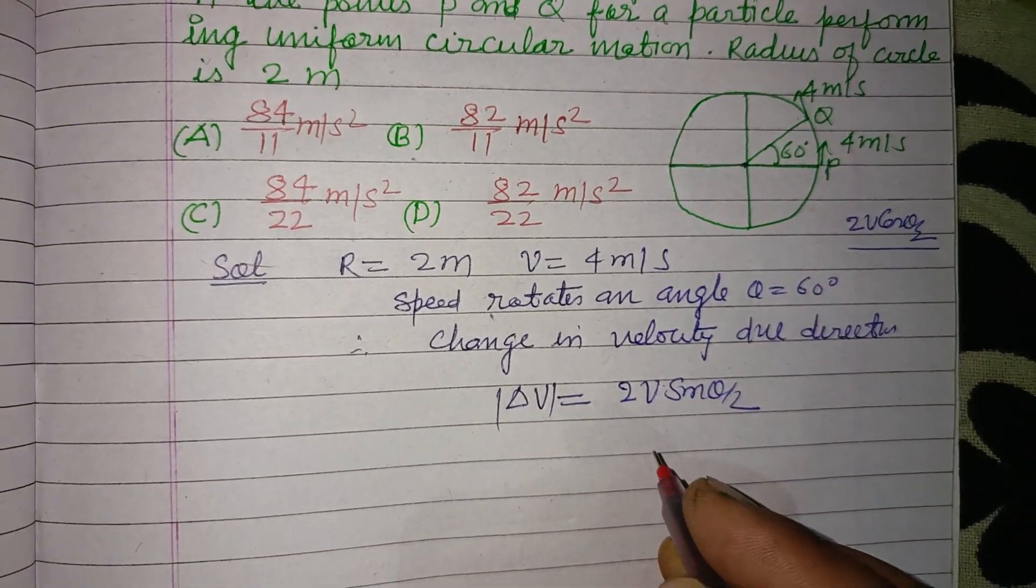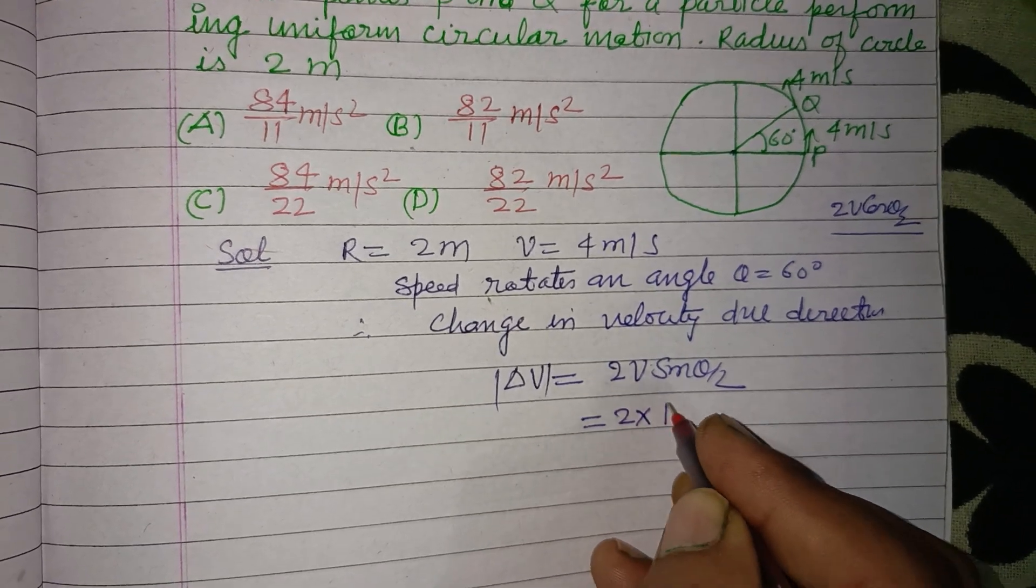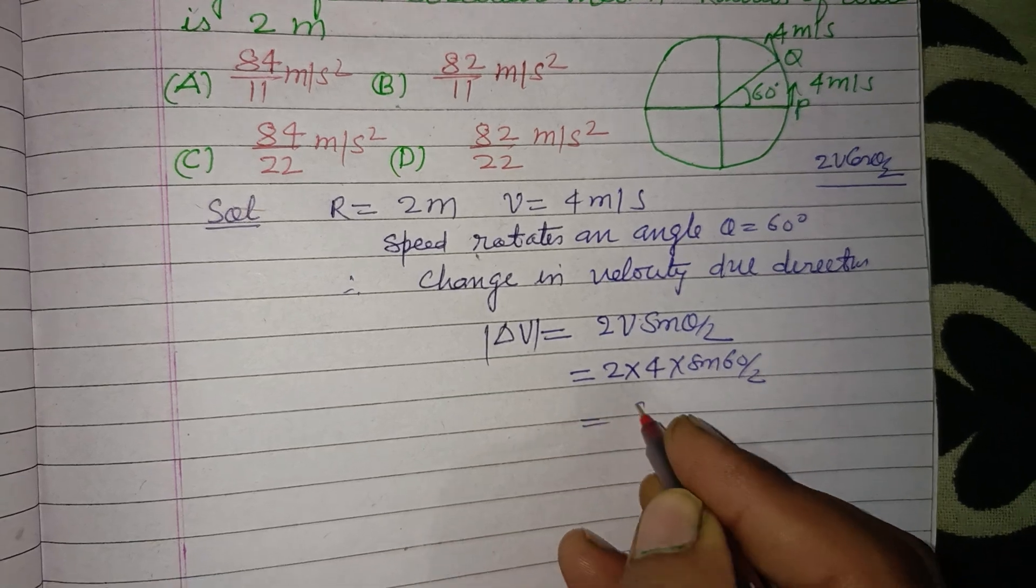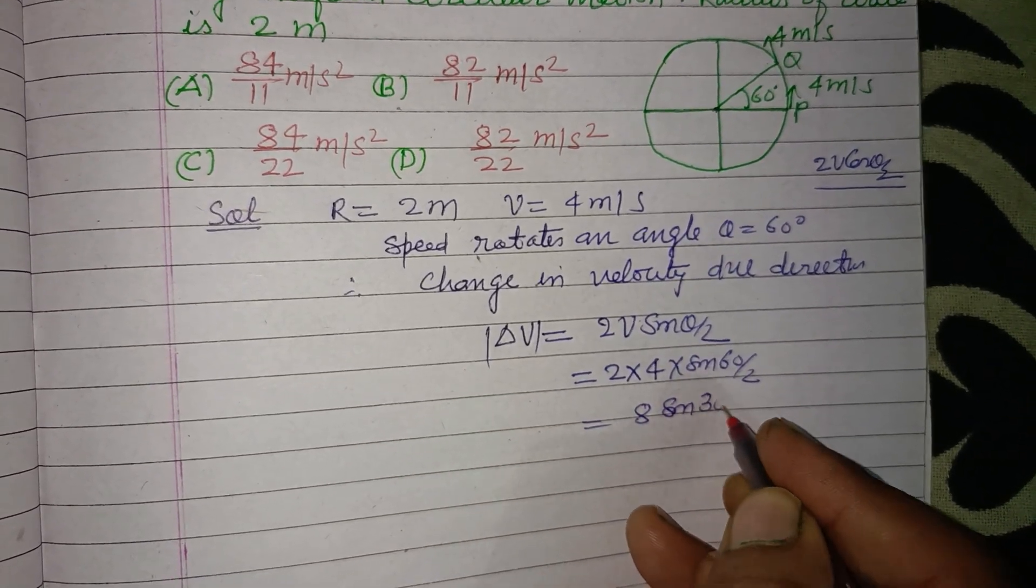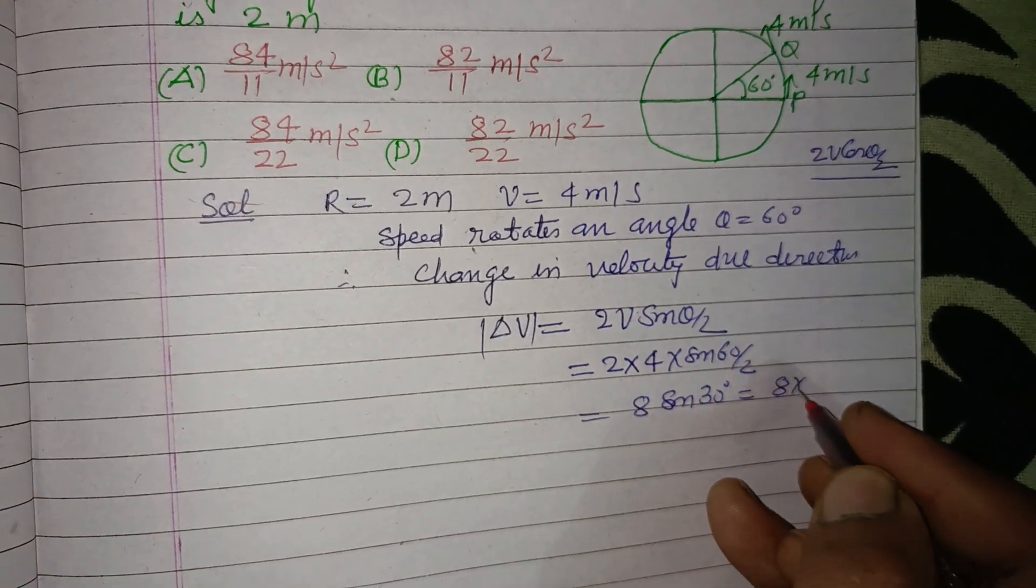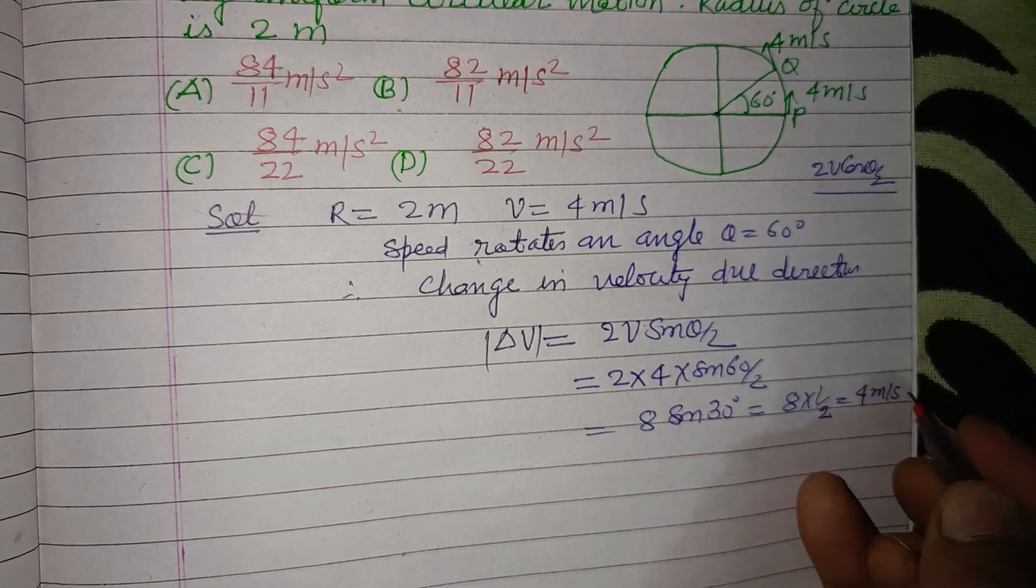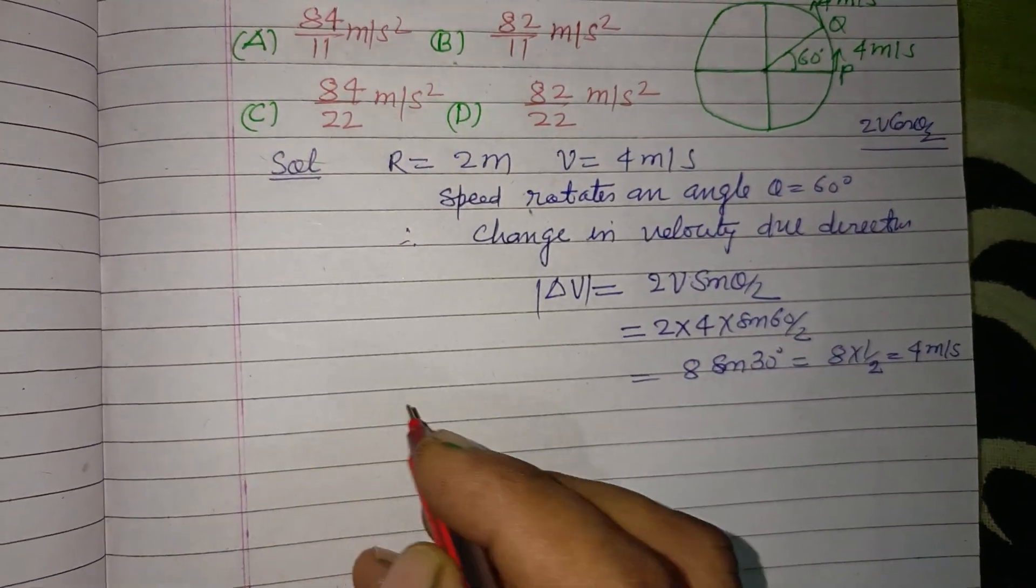So this is the velocity change, we find it here. v is given 4, sin theta is 60 by 2. So this is 8 sin 30. So this is 8 into 1 by 2 that is 4 meter per second. So this is the change in velocity.